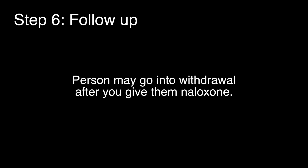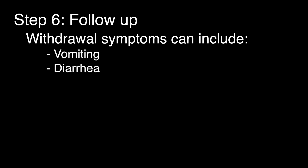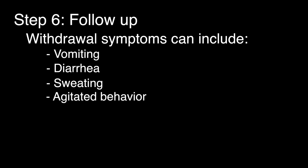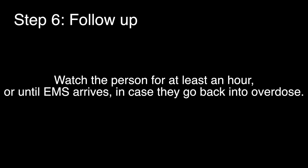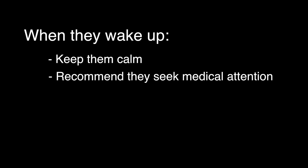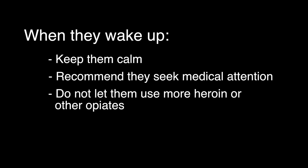Step 6: Follow up. If the person is dependent on heroin or other opiates, they may go into withdrawal after you give them naloxone. Withdrawal symptoms can include vomiting, diarrhea, sweating, and agitated behavior. This may be unpleasant but it is not life-threatening and only lasts until the naloxone wears off. Tell them that naloxone wears off in 30 to 45 minutes and there are still drugs in their system. Within 90 minutes, the withdrawal effects will be gone. Watch the person for at least an hour in case they go back into overdose. When they wake up, keep them calm, recommend they seek medical attention, and do not let them use more heroin or other opiates — the naloxone will block it and they could overdose again once it wears off.